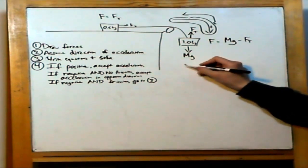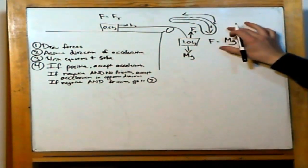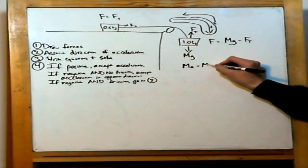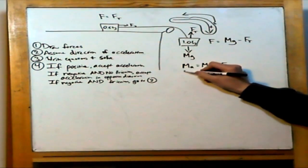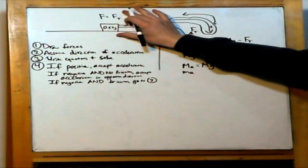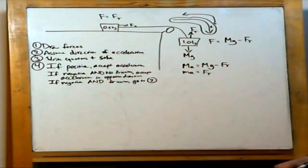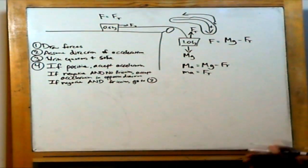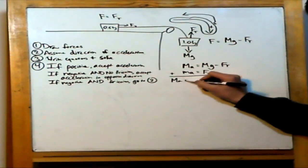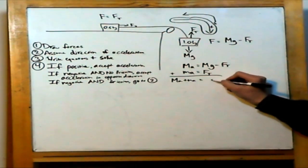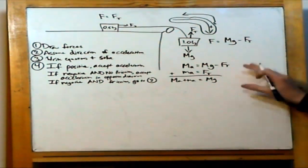Let me bring these equations somewhere more manageable. Recall that force equals mass times acceleration. So for the first equation: big M times acceleration equals Mg minus the force of tension. For the second, I'm going to use little m for the smaller mass: little m times acceleration equals the force of tension. Notice that if we add these two equations together, the force of tension disappears. So let's do that — we get MA plus ma equals Mg.